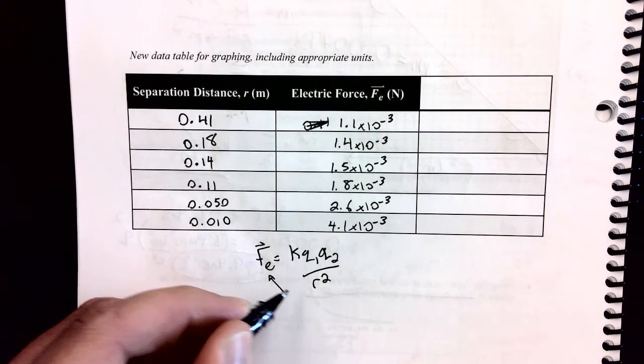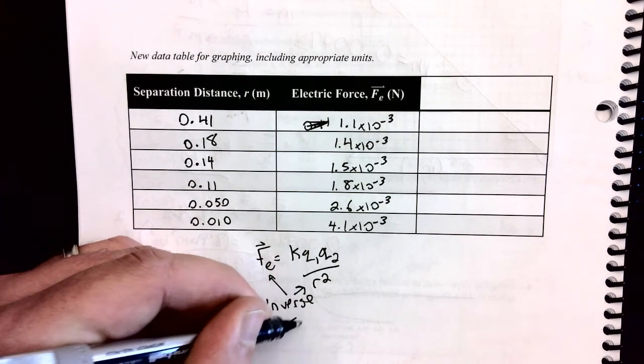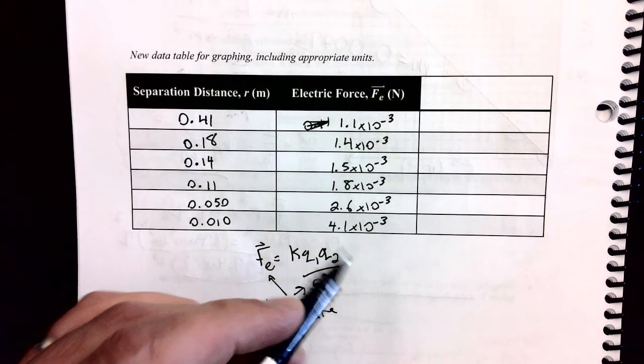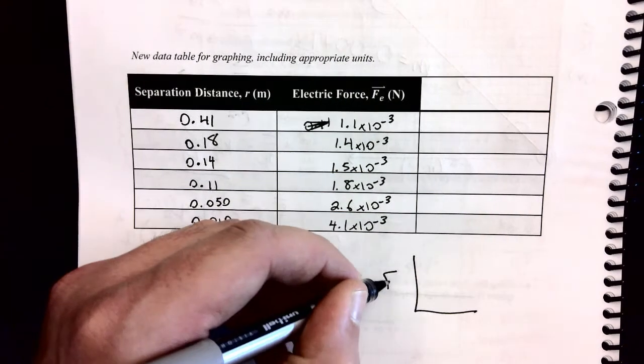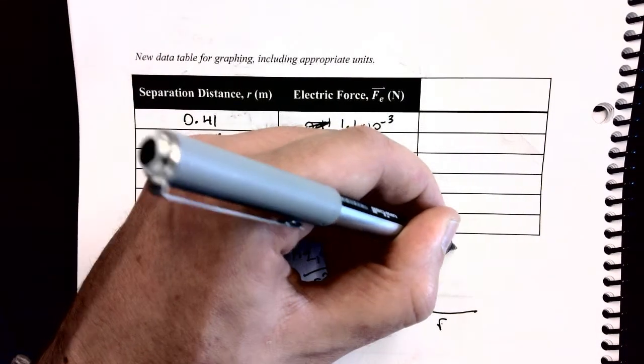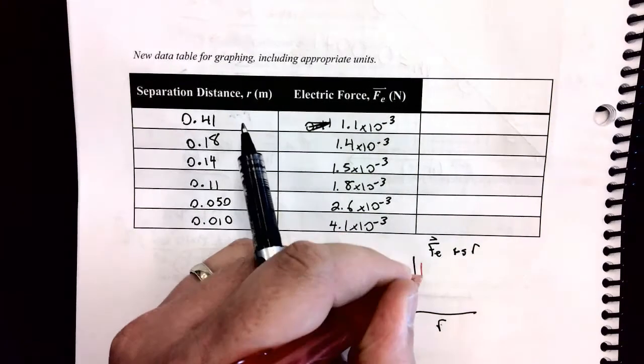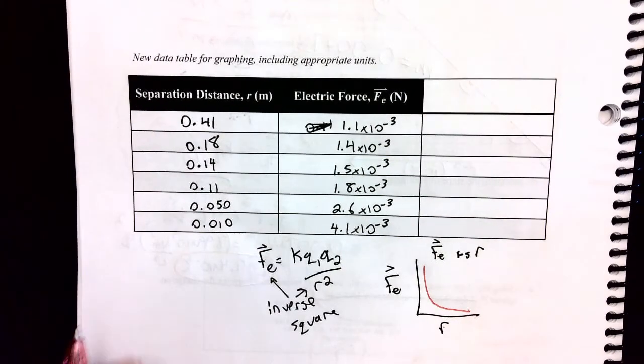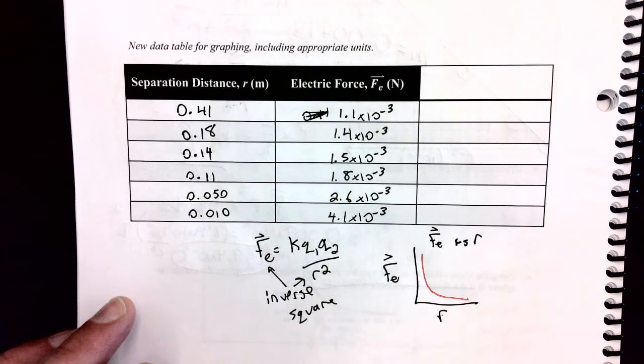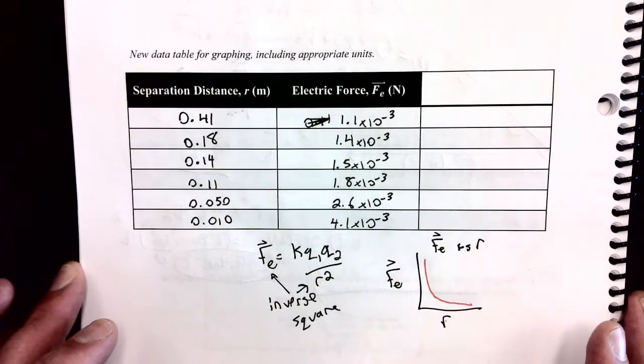So this is an inverse square relationship. The other way we know this is when we look at the original set of data, when we graph that on our calculator, just electric force versus regular old separation, we get an inverse square shape which looks kind of like that. So two reasons that we know we're going to need to take our r values and then inverse square them to make our straight line graph.